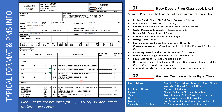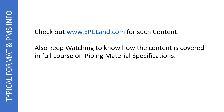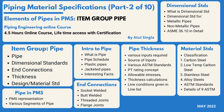Once we understand these components, we can understand the PMS of any project. We can look into the dimensional standard and material standard, and once we understand the description details and why specific items are chosen for a particular service and PT rating, we can implement this smoothly. We can also start preparing this kind of document for future projects.